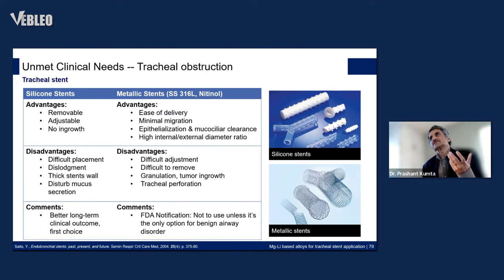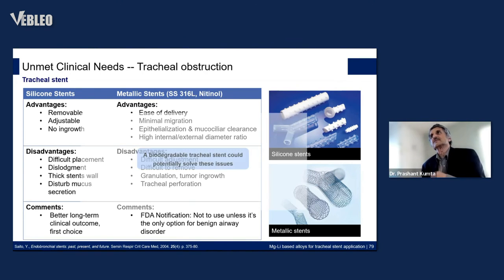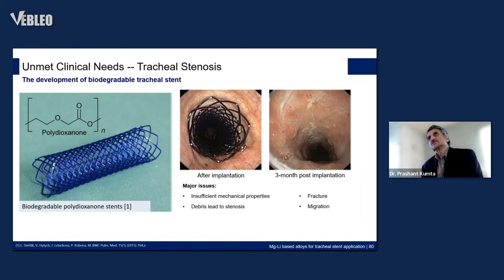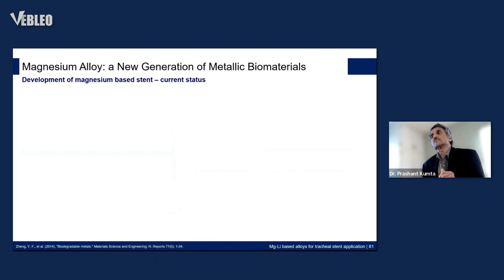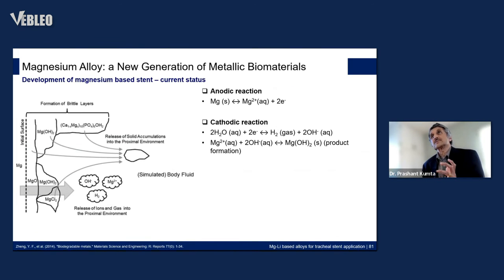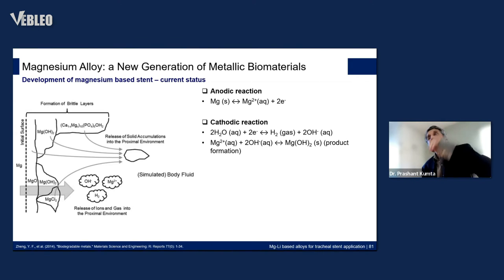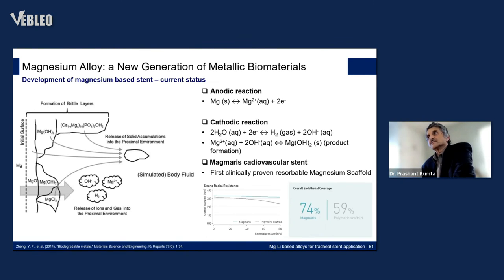Current stents — silicone, nitinol, stainless steel — all have the major disadvantage of not degrading, so they remain inside. Biodegradable tracheal stents would potentially solve these issues. The market has polydioxanone as a biodegradable stent, but the problem is insufficient mechanical properties — being a polymer it is very soft, leads to debris causing stenosis, and shows fracture and migration three months after implantation. So there is still a need for stronger biodegradable tracheal stents. Magnesium alloys afford a new generation of metallic biomaterials for stents; Magmaris has already been clinically proven in Europe as a resorbable cardiovascular stent.